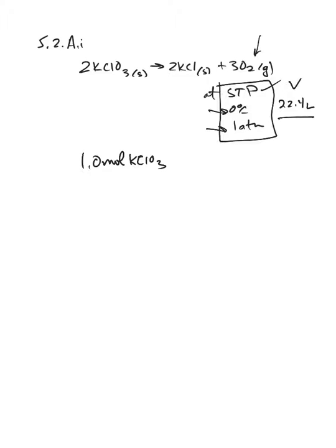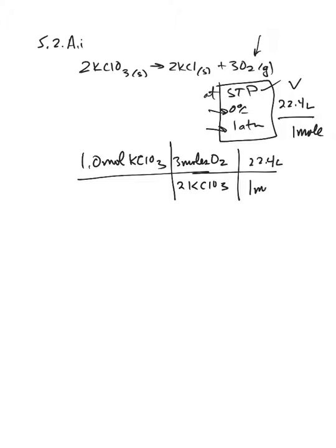So if you start with one mole of KClO3, and you look at your balanced equation, you could do some dimensional analysis, and do 3 moles of oxygen are produced for every 2 moles of KClO3, and if 22.4 liters, I forgot to say this earlier, 1 mole of gas is 22.4 liters, is equivalent to 1 mole of O2, you could calculate yourself a volume.